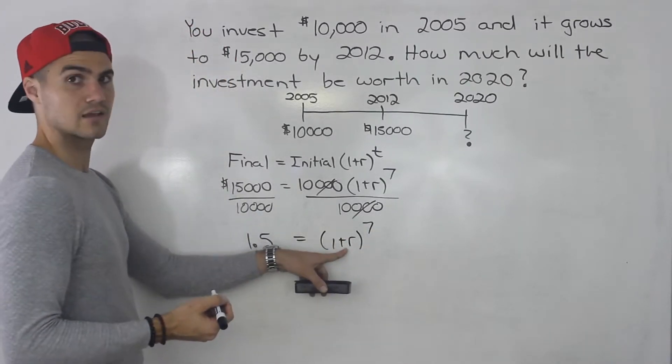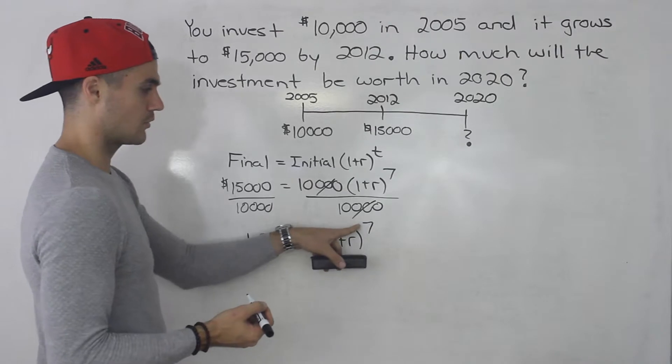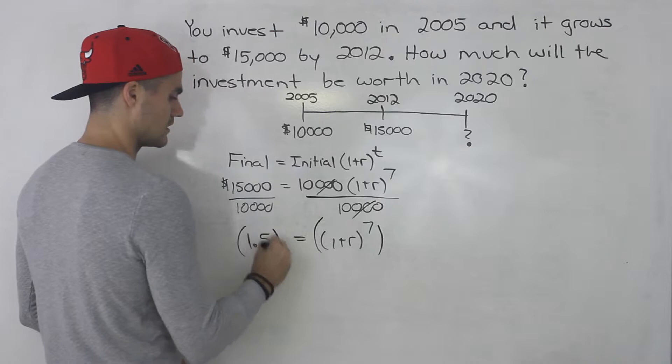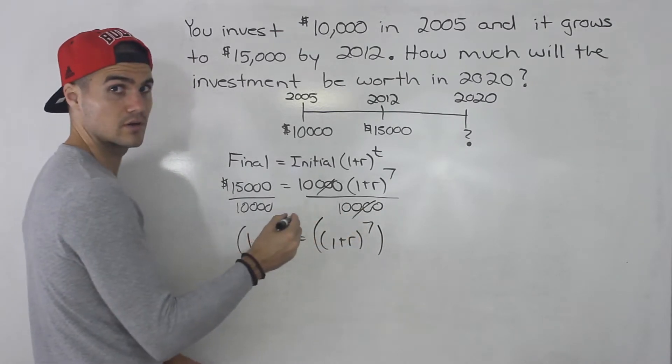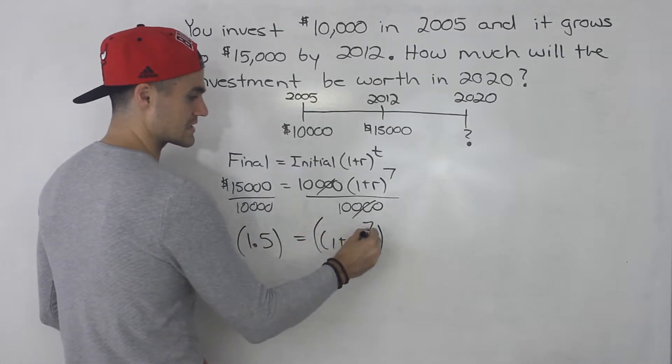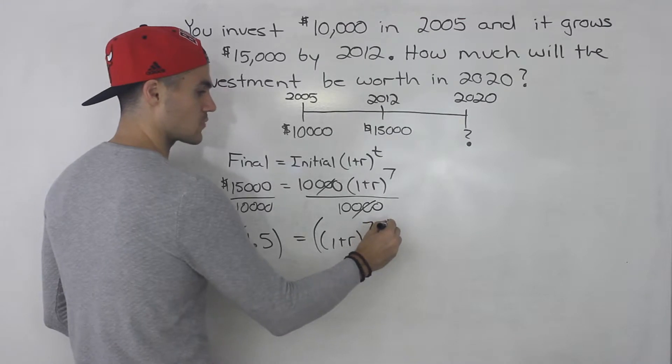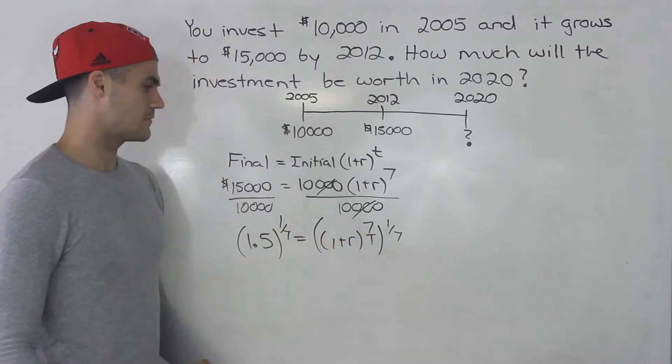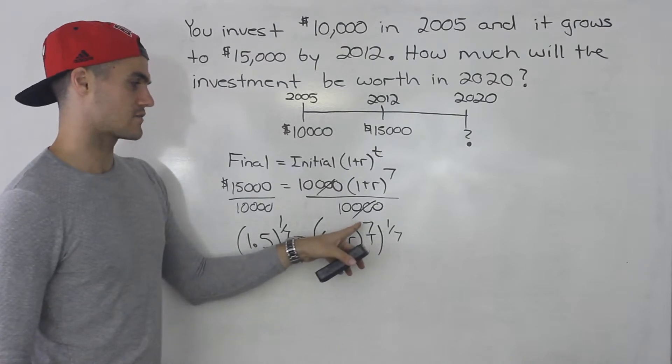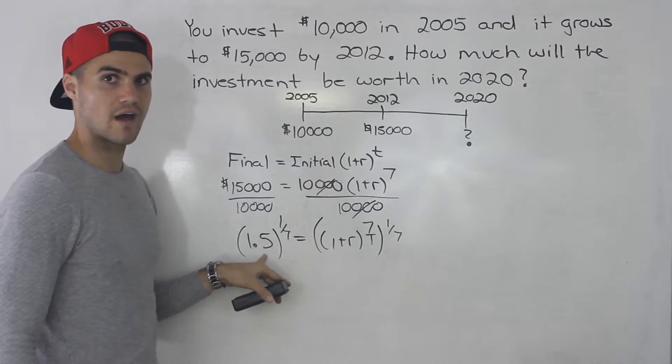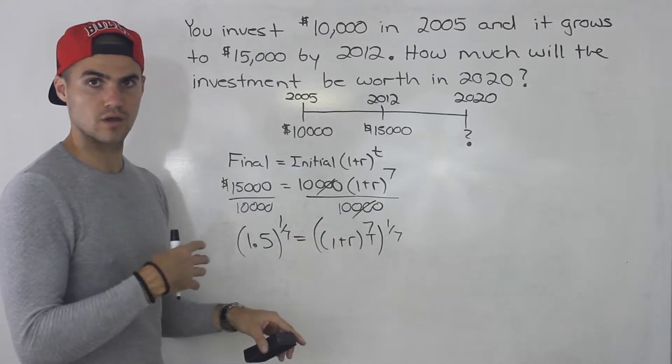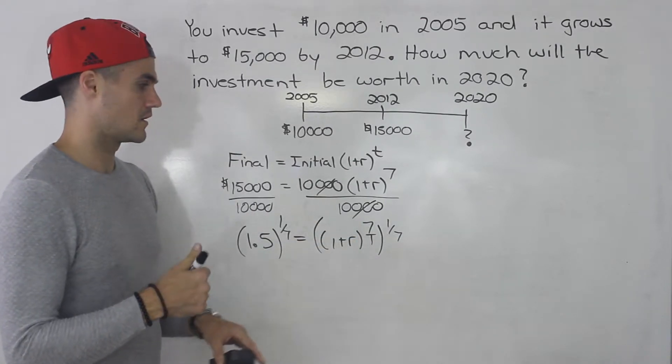Now how do we isolate for this r here? Well when we have an exponent that we want to get rid of we can just take both sides to the power of the reciprocal of that exponent. So this is like 7 over 1, so the reciprocal of that is 1 over 7. This is going to be 1 over 7. And that makes sense because (1 plus r) to the power of 7 has to equal 1.5. So if we want to get rid of that exponent we would take the seventh root of both sides.